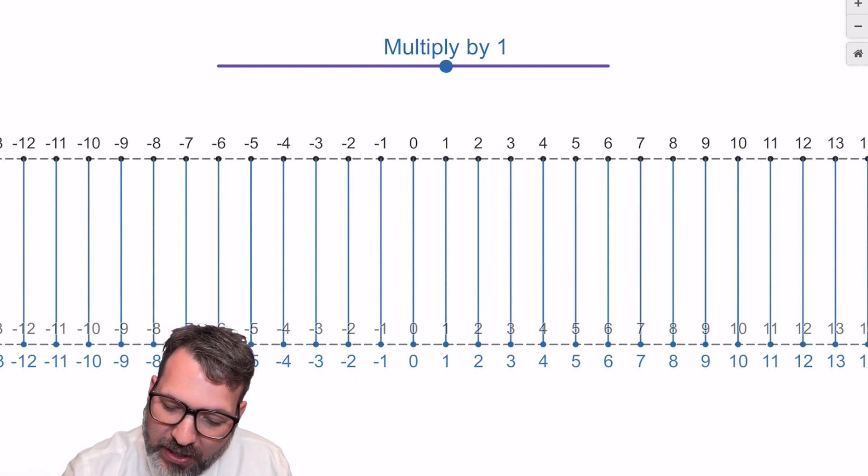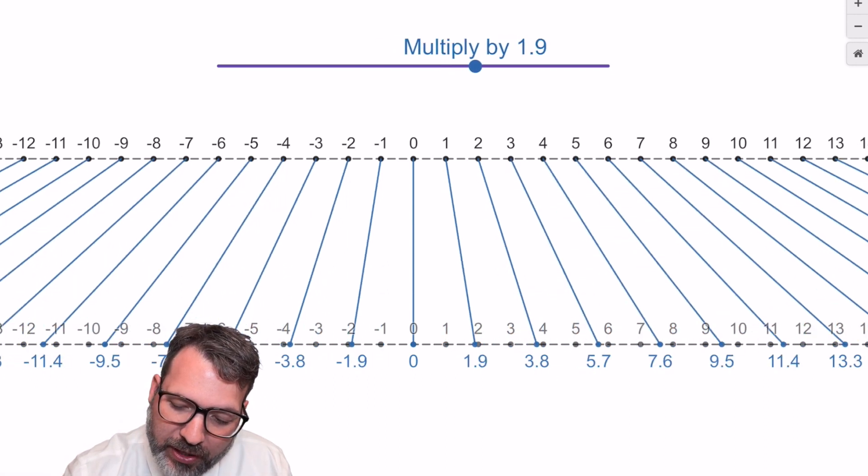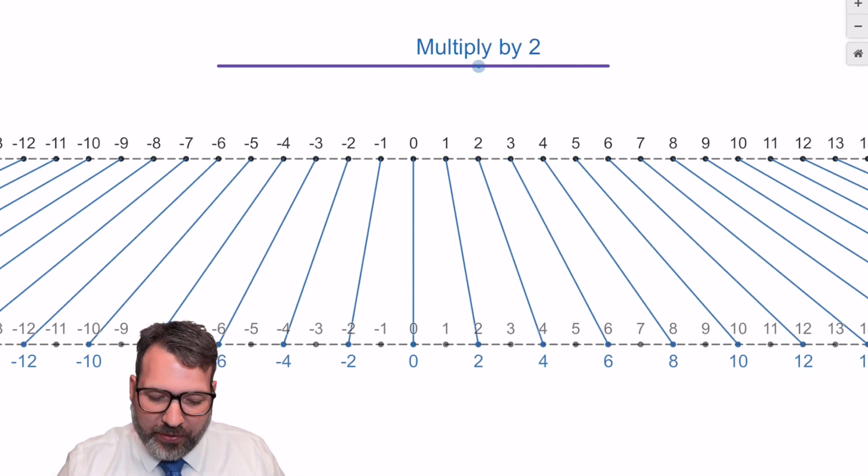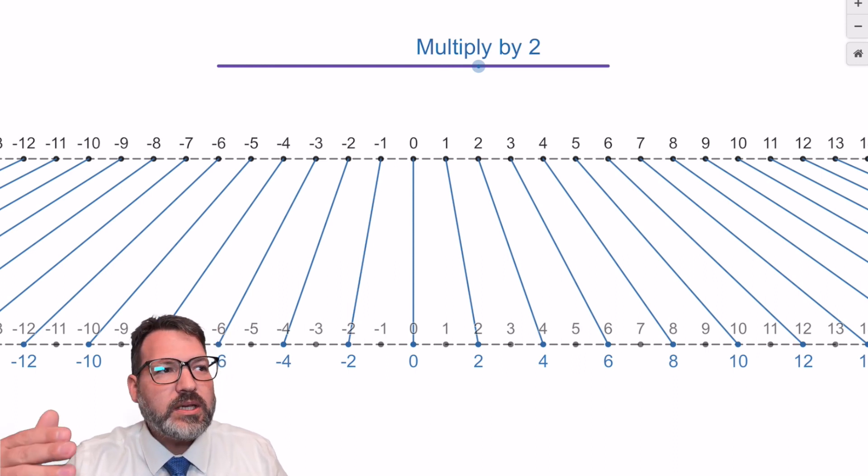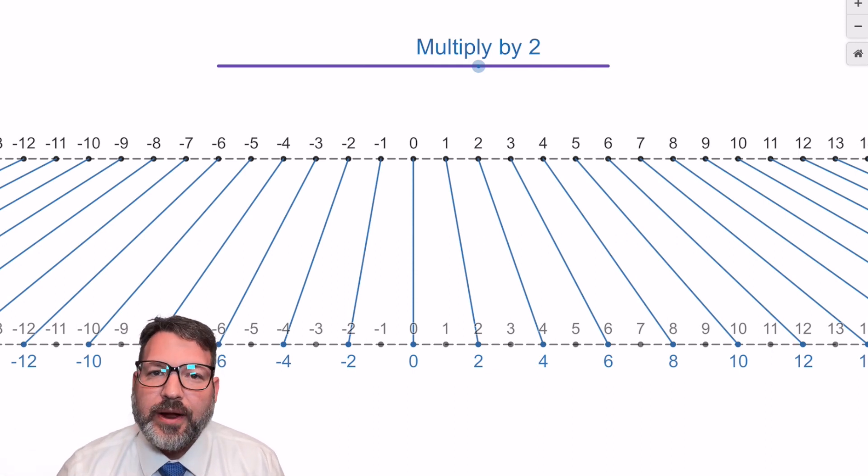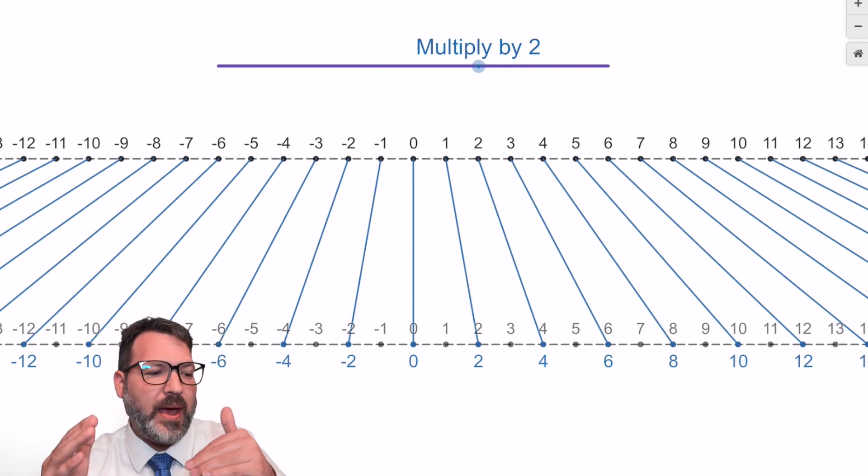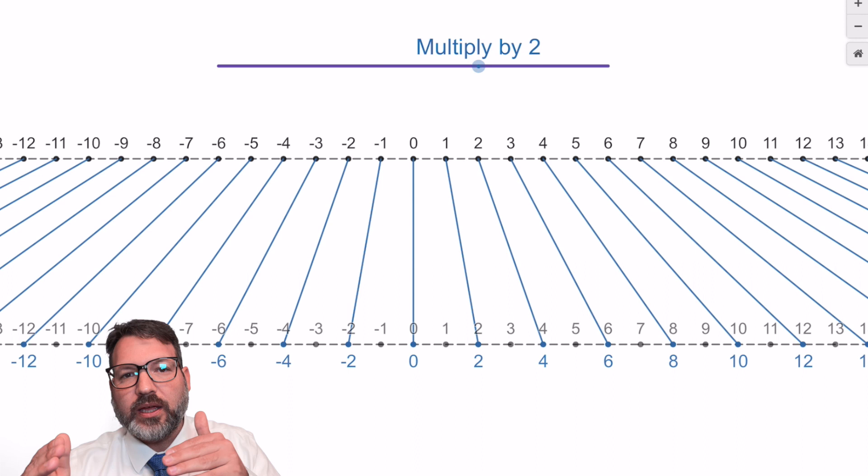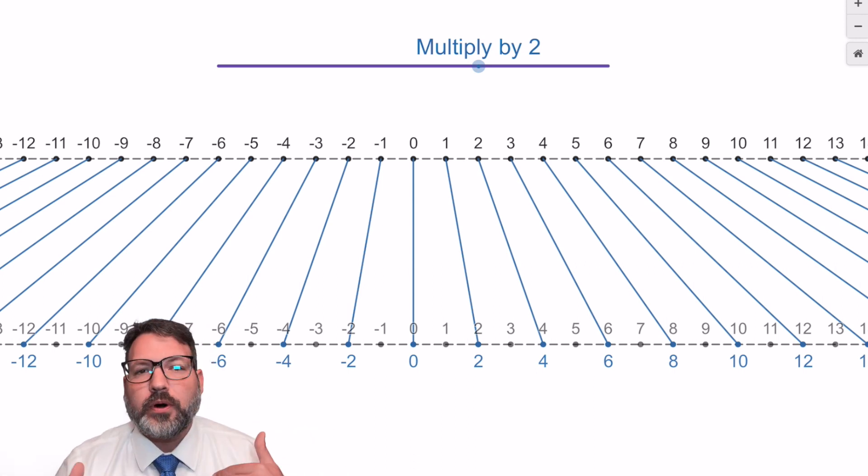But as I change my scalar, as I change this multiplication factor to, let's say, 2, you can see that the number line begins to stretch out. Because now I need 1 to map onto 2, and 2 to map onto 4, and 3 to map onto 6. Of course, 0 is the only point on the number line that's going to stay fixed this entire time. Anything times 0 is 0. And then to the left on the number line, you can see that it is also spreading out, just spreading out in the opposite direction. Negative 1 maps onto negative 2. Negative 2 maps onto negative 4, and so on.